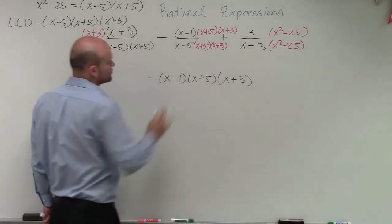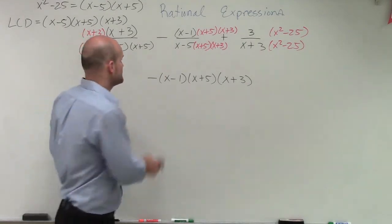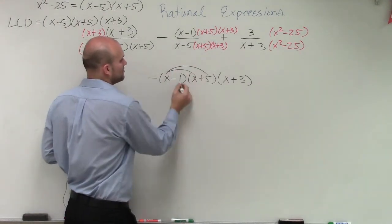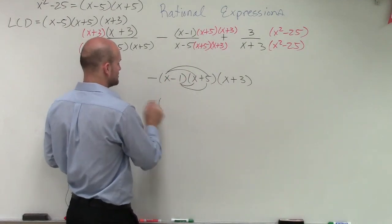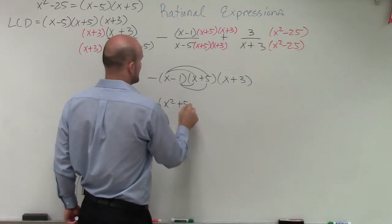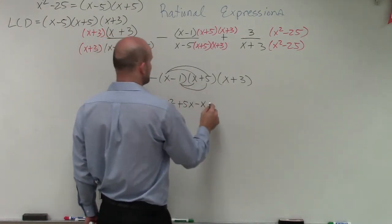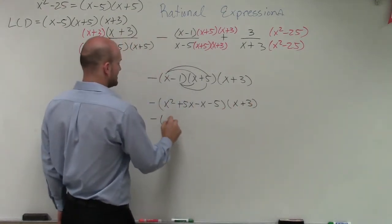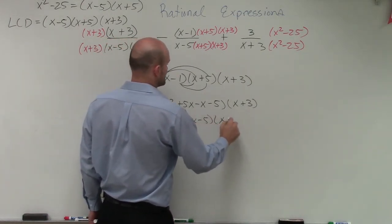So I have three different binomials. When multiplying three binomials, we want to do two at a time. I'm going to set aside the negative sign for now and apply FOIL to the first two binomials: x times x is x squared, x times 5 is positive 5x, negative 1 times x is negative x, and negative 1 times 5 is negative 5. That simplifies to x squared plus 4x minus 5, times x plus 3.